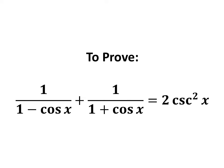In this video, we will learn to prove the trigonometry identity 1 upon 1 minus cosine of x plus 1 upon 1 plus cosine of x is equal to 2 times square of cosecant of x.